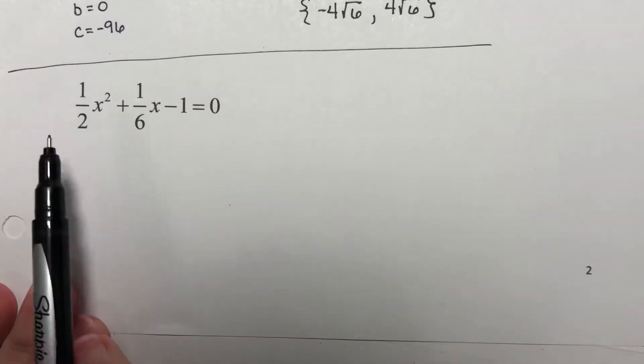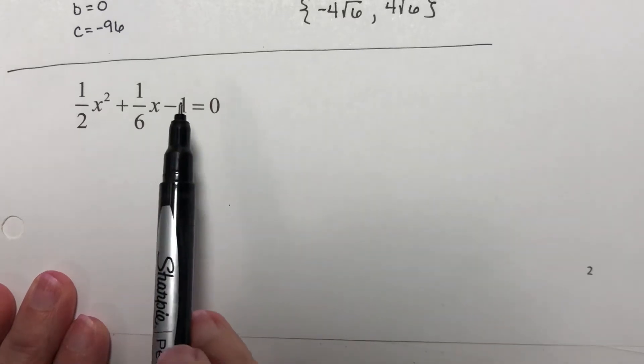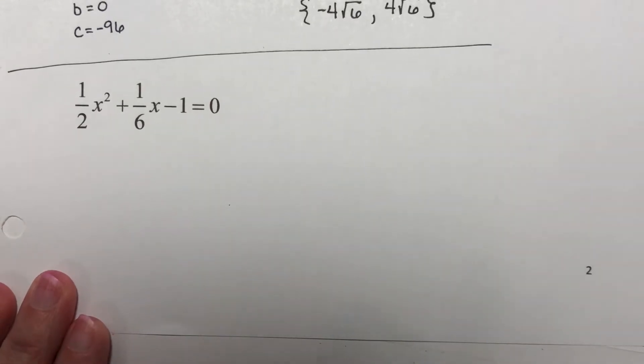I can say my a is 1 half, my b is 1 sixth, my c is negative 1. Use the quadratic formula and solve it.